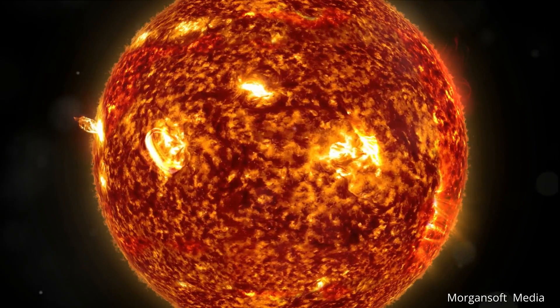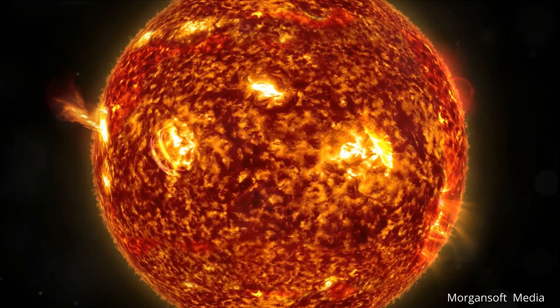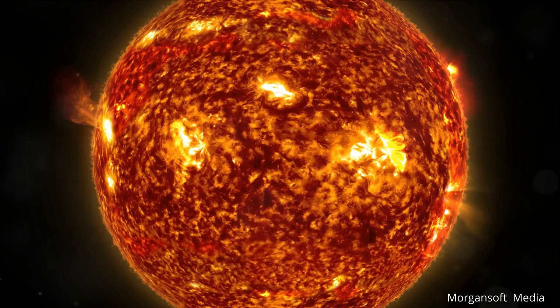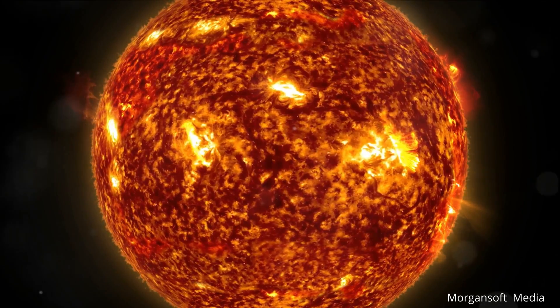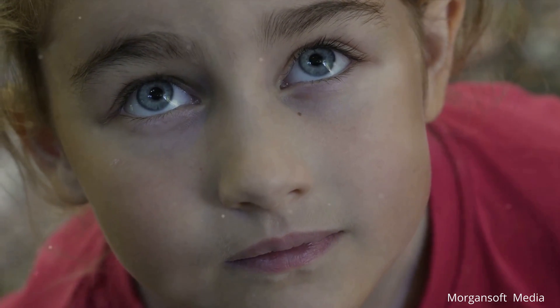On September 1st, 1859, Richard Carrington, an amateur astronomer, witnessed an intense white light flare on the Sun's surface, which was the solar flare associated with the Carrington event. This flare was so powerful that it was visible to the naked eye and marked the first documented observation of a solar flare.